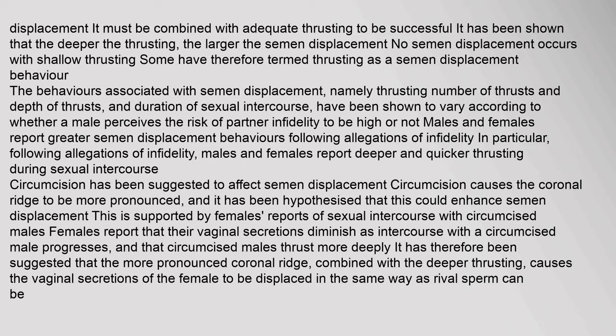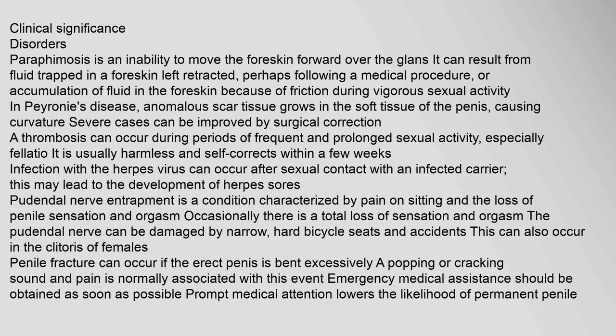Paraphimosis is an inability to move the foreskin forward over the glans. It can result from fluid trapped in a foreskin left retracted perhaps following a medical procedure, or accumulation of fluid in the foreskin because of friction during vigorous sexual activity. In Peyronie's disease, anomalous scar tissue grows in the soft tissue of the penis causing curvature; severe cases can be improved by surgical correction. A thrombosis can occur during periods of frequent and prolonged sexual activity, especially fellatio; it is usually harmless and self-corrects within a few weeks.